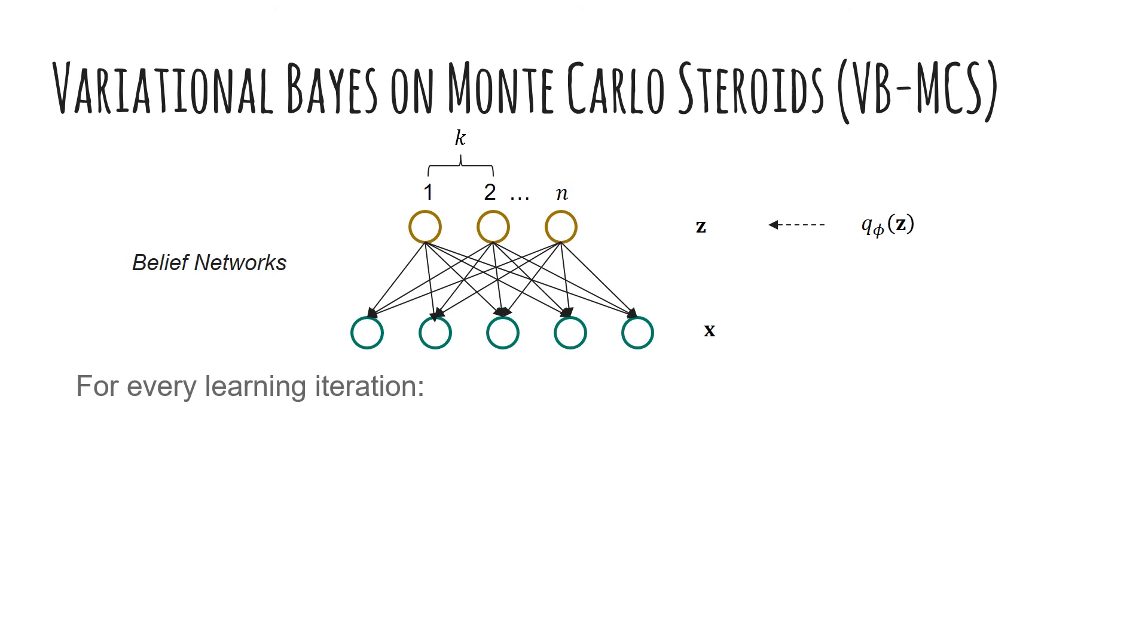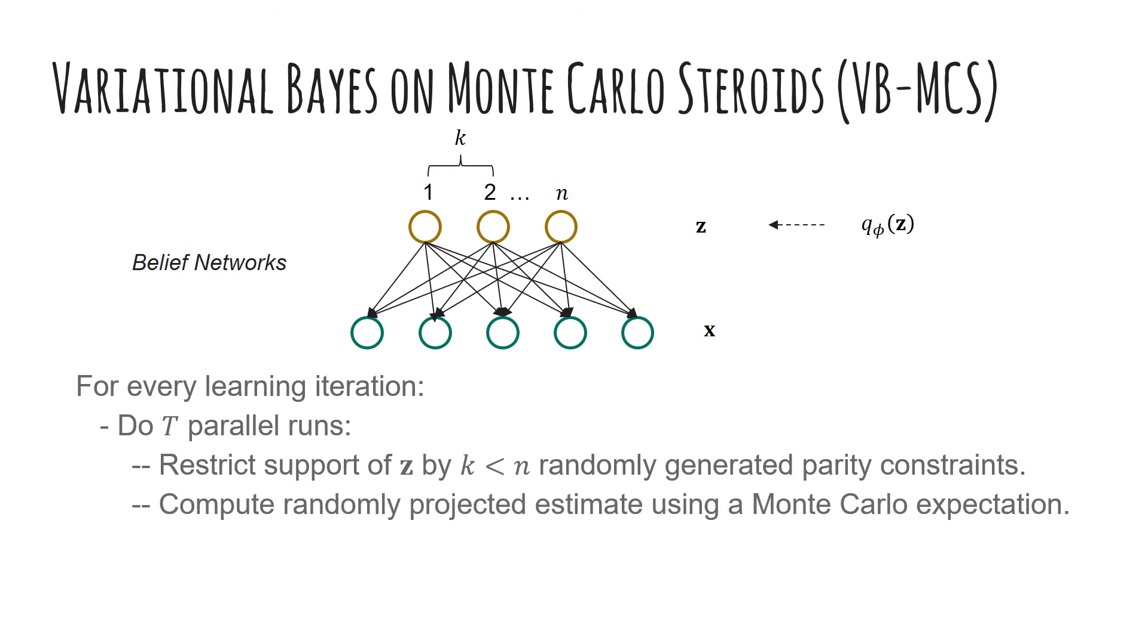At every iteration of a gradient-based algorithm such as SGD, we perform t runs of random projections in parallel, where we first randomly generate constraints to restrict the support of the posterior distribution. Then, we minimize the KL divergence between the approximate distributions belonging to a variational family and the projected posterior. Unlike standard variational approaches, where the Monte Carlo estimation computes an expectation over a handful of states, VB-MCS reasons over exponentially many configurations of the approximate posterior.